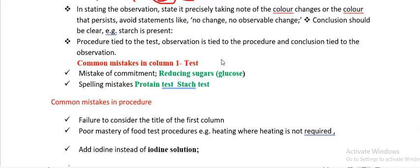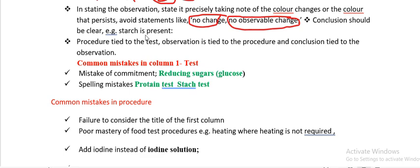When stating the observation, be precise and take note of colour changes or the colour that persists. Avoid statements like 'no change' or 'no observable change' — these are wrong. The only acceptable phrase is 'no colour change.' You should also write the final colour to avoid such mistakes. Conclusions should be clear, e.g., 'starch present.' It is wrong to say 'starch is not present' — just say 'starch absent.'